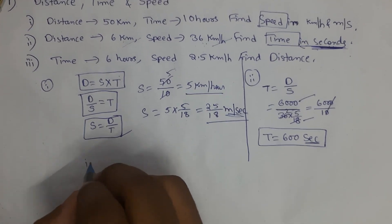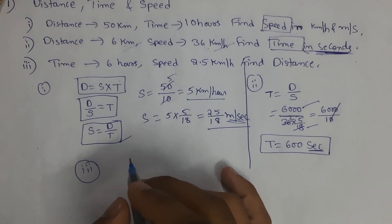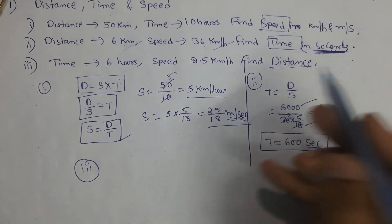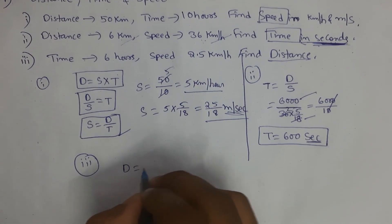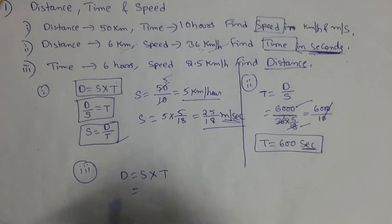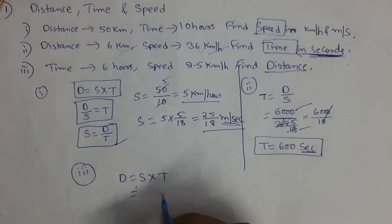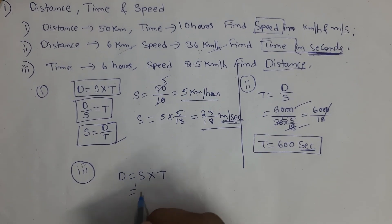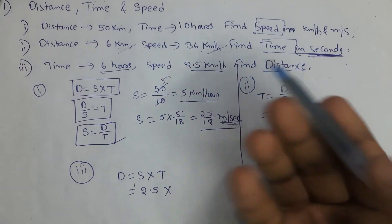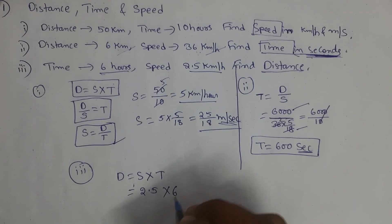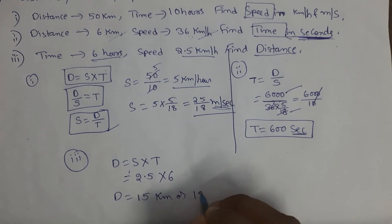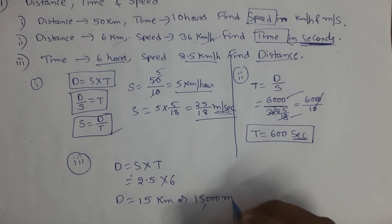Coming to the third problem: time is given in hours and it was asked to find out distance. So distance is equal to speed into time. Here speed is given in kilometers per hour, that is 2.5, and time is also given in hours. Both are in the same units, so no need to convert them. We can see the distance is equal to 15 kilometers or 15,000 meters.